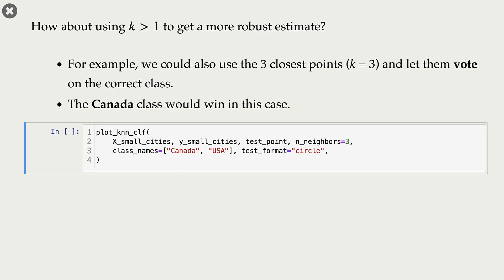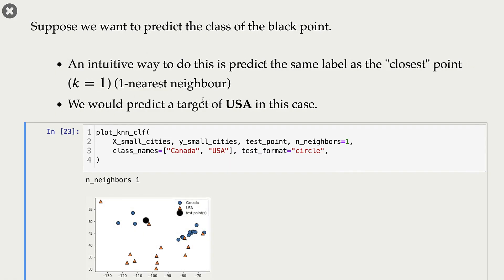Now we don't have to be restricted to just one neighbor — we can also try multiple neighbors. The variable we use for the number of neighbors is k, and that's why this algorithm is called k-nearest neighbors. In the first case, our k was 1, meaning we were looking for just one nearest neighbor.